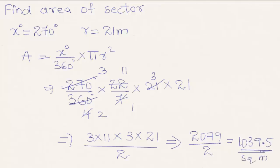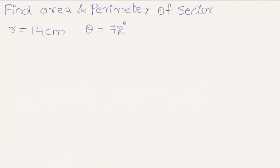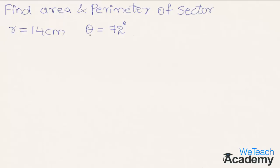Now let us proceed and discuss one more example. Here the given example is to find the area and perimeter of a sector when the radius is equal to 14 centimeters and theta, which is the angle made by the arc, is equal to 72 degrees.